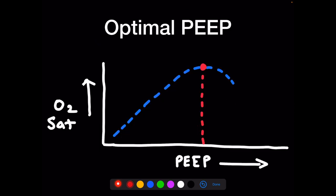As you increase PEEP, oxygen saturation initially improves as alveoli open up. Then you reach a point of over-distension and decreased circulation, and saturation turns for the worse. Every patient has their own optimal PEEP, and that optimal PEEP may change as their condition changes.